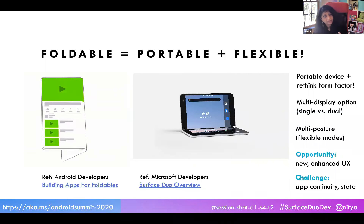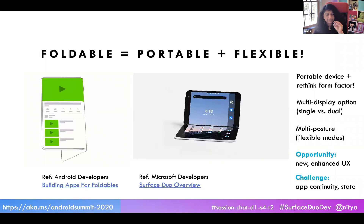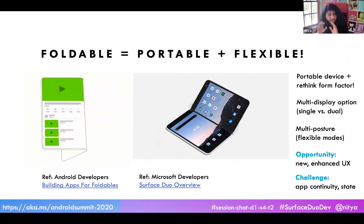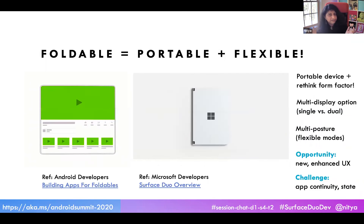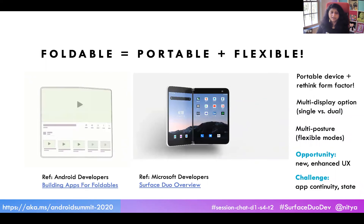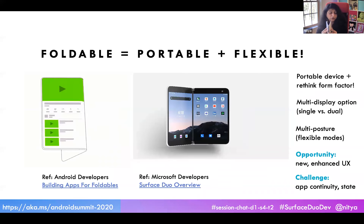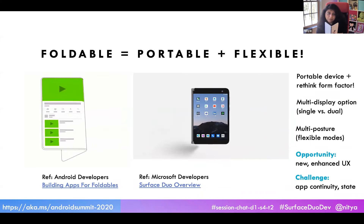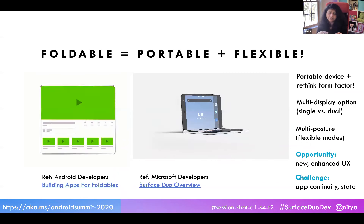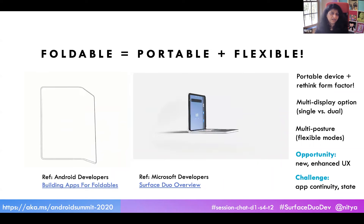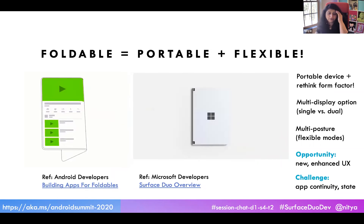The opportunity comes from foldable devices having multiple postures — the modes in which you can put the device. With the Surface Duo, you can use it like a book, flatten it out as a tablet, turn it inside out in tent mode, or fold it. That means many configuration changes or states you need to account for, making app continuity across those the core challenge.